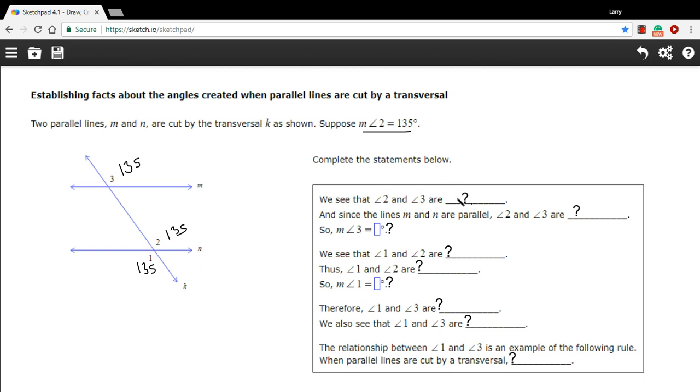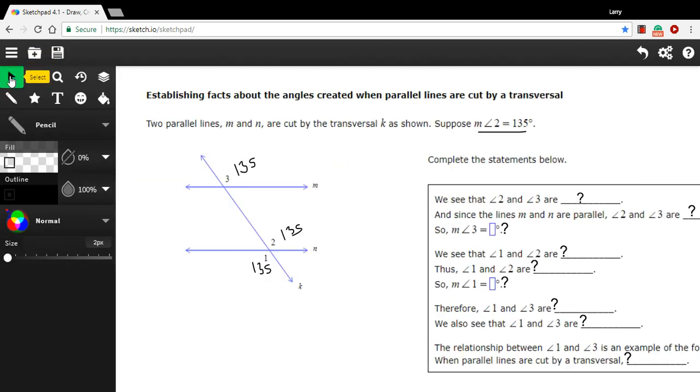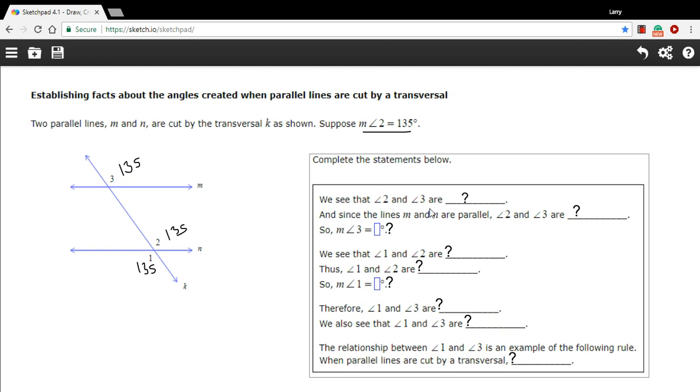Let's see if we can go ahead and fill in the blanks that they're asking for. Let me grab a different tool. So it says, we see that angle 2 and angle 3 are what? And I think in this case, they're just looking for the fact that they're corresponding angles.